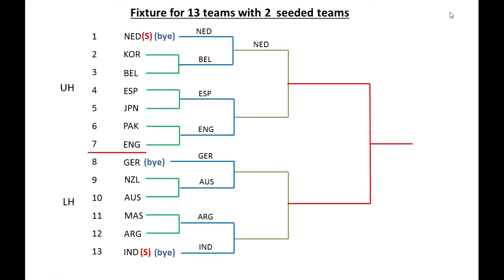Netherlands has advanced to the semi-final. Spain and England — Spain has advanced to the semi-final. Germany and Australia — Australia has won the match. Argentina and India — India has advanced to the final. The first semi-final is between Netherlands and Spain — Spain has advanced to the final. The second semi-final is between Australia and India — India has advanced to the final. The final match is between Spain and India, and India has emerged as champion.